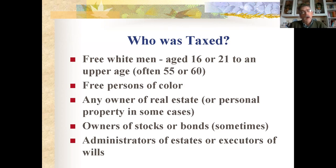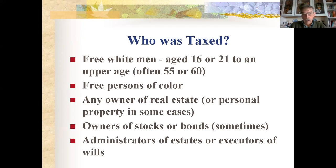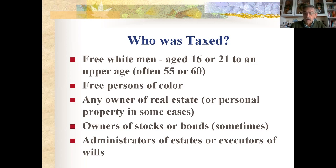Who was taxed? Typically free white men age 16 or 21 and up, and by state law there was usually an upper limit — often age 55, 60, or 65 — that may change from year to year. Free persons of color were taxed right along with free white men. Any owner of real estate or personal property was taxed, as were owners of stocks and bonds in some periods. Administrators of estates or executors of wills were also taxed for certain individuals.